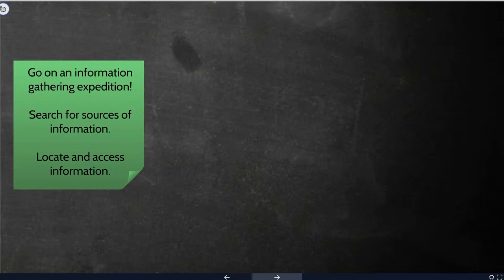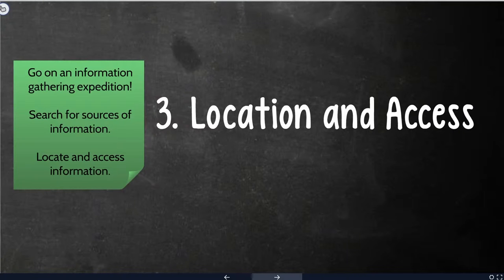The third part is when you actually get to do something. Go out. Go on your information expedition. This is where you're searching for your sources of information. You're locating them and you're accessing them. So it should make sense then that this stage is called location and access. This is the stage where you are actually performing those searches on the computer, where you're actually coming into the library and going to the shelves and pulling off books that you think would be relevant to your topic.